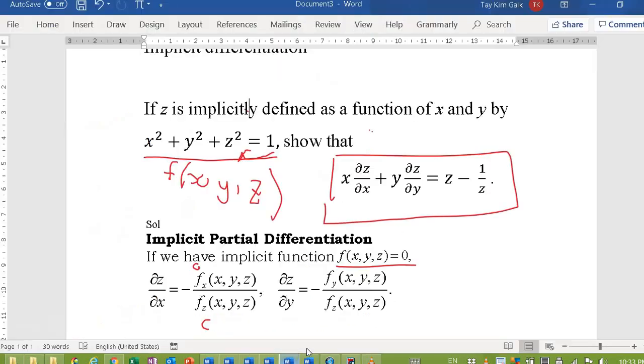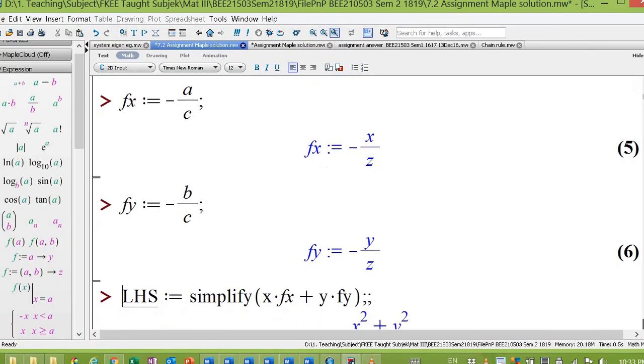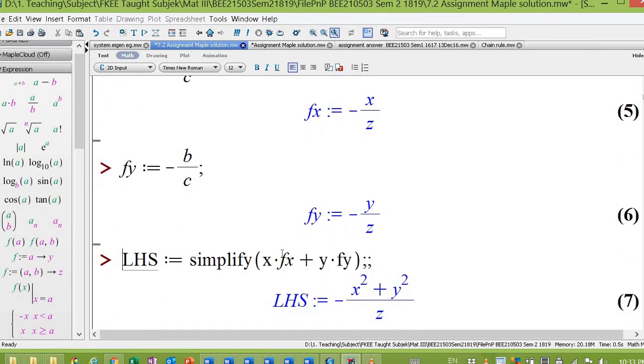Okay, and we are going to show left side equals right hand side. The left hand side is x·∂z/∂x + y·∂z/∂y. So you have x·fx + y·fy.